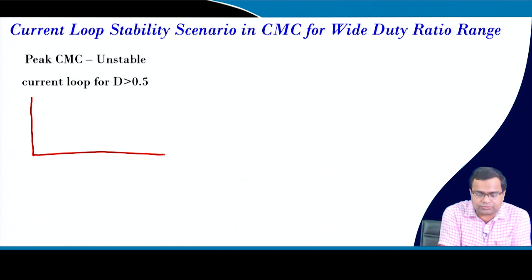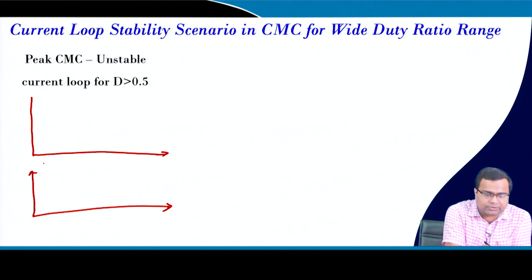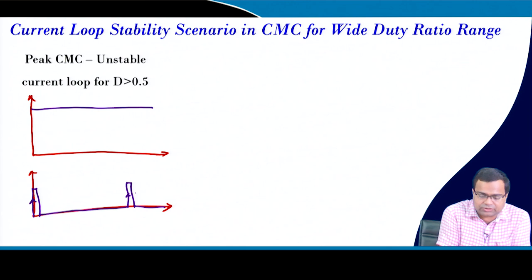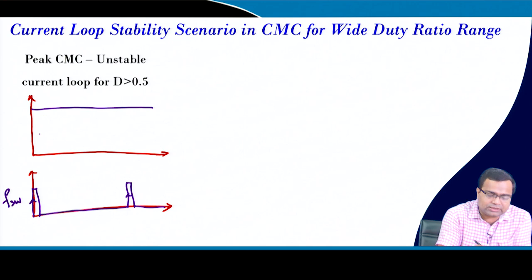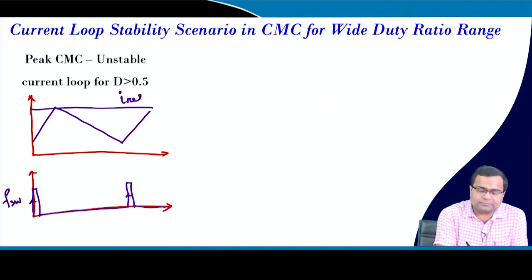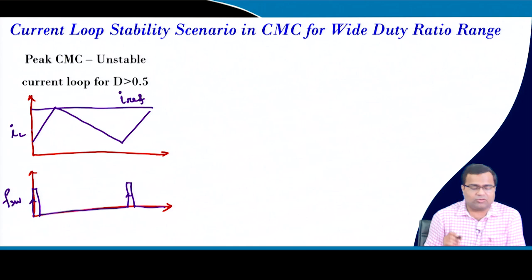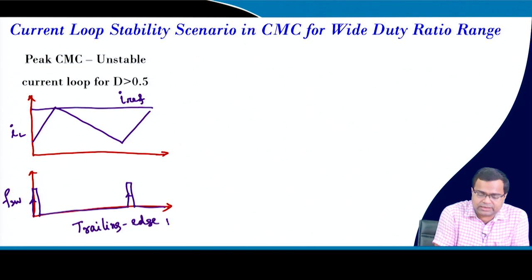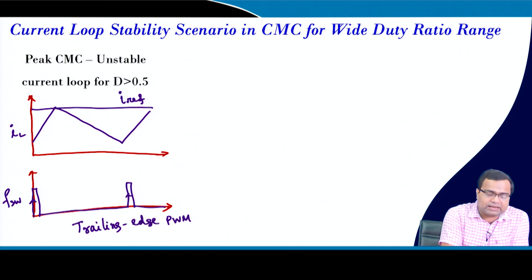Let us consider peak current mode control waveforms - this is also called trailing edge modulation or trailing edge PWM, because here the switch turns on at the rising edge of the clock. We have our switching clock FSW, our peak reference current, and the inductor current.